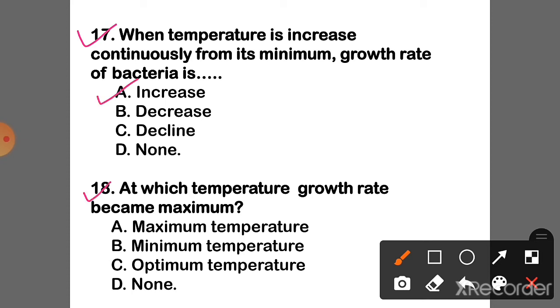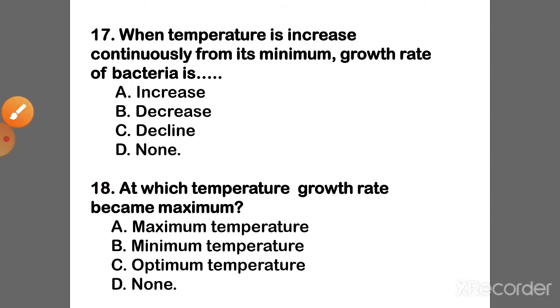Question 18: At which temperature does growth rate become maximum? The correct answer is Option C — Optimum temperature.